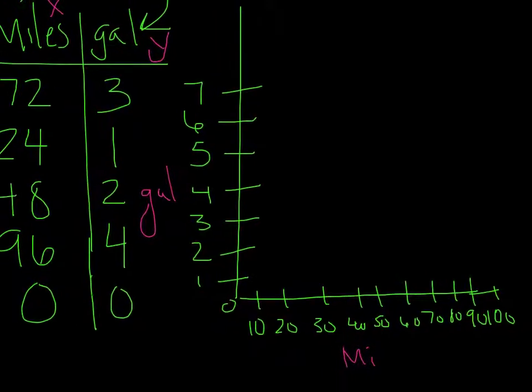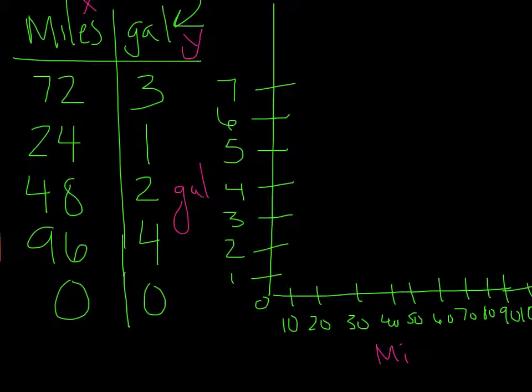Okay, let me zoom over here. So my first thing that I'm going to graph was that 72, 3, so 72, 3, 48, 2, 1, 24, or 24, 1 I mean. 24, 1, 0, 0, and again that 96, 4. And I'm going to go ahead and connect that line. So there's my graph.